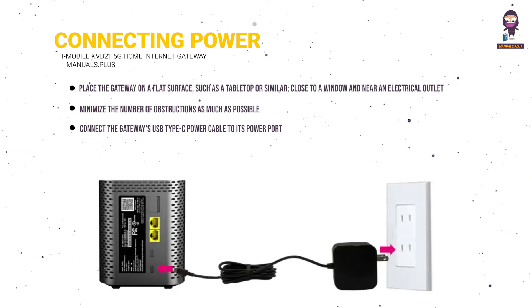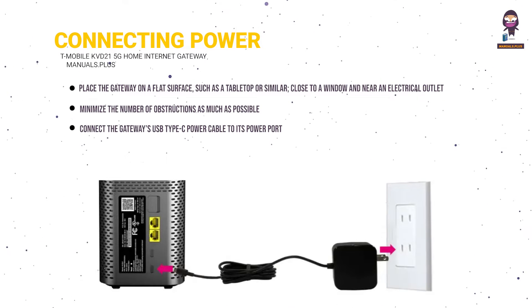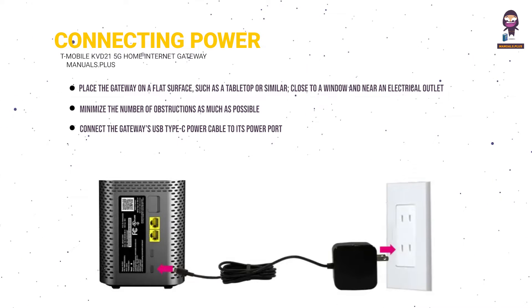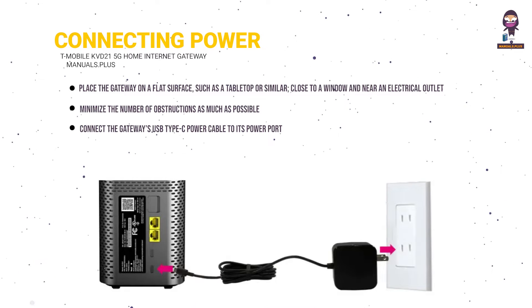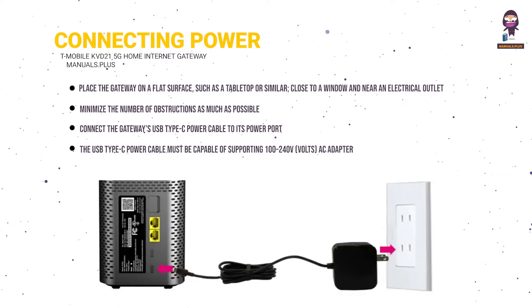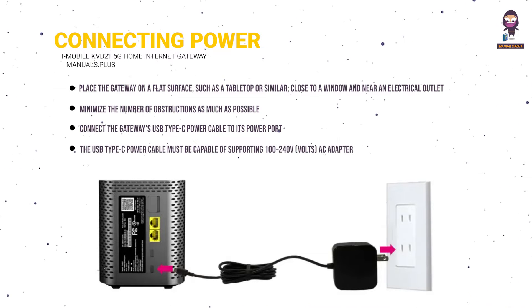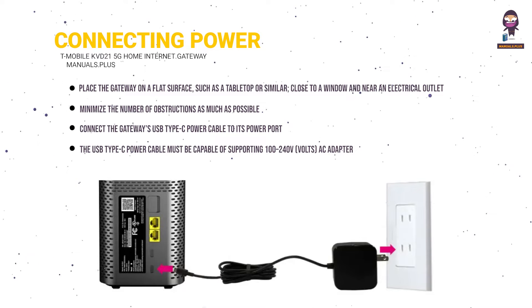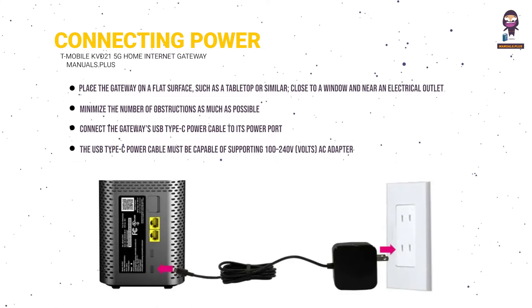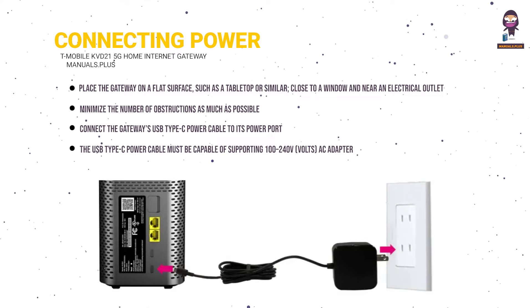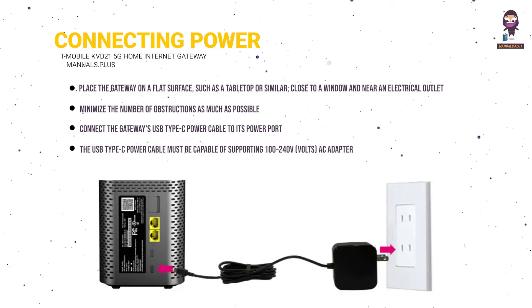Connect the gateway's USB Type-C power cable to its power port, then plug the other end of the power cable into a grounded electrical outlet. The USB Type-C power cable must be capable of supporting 100–240V AC adapter, 50–60 Hz frequency, and 3A of current at DC 15V.